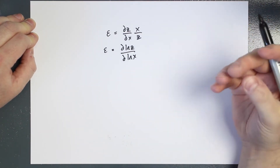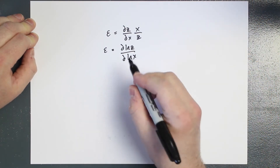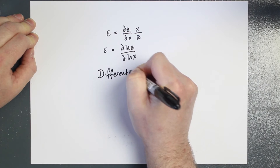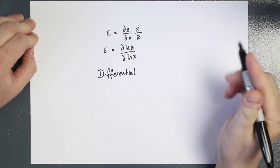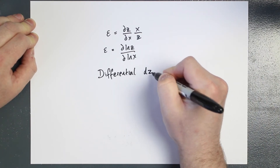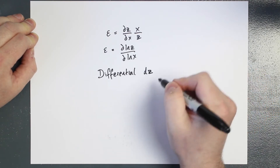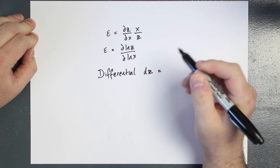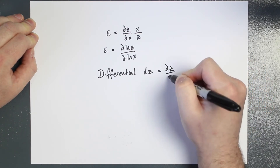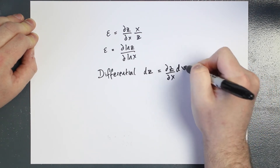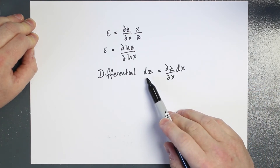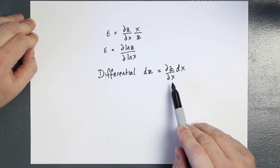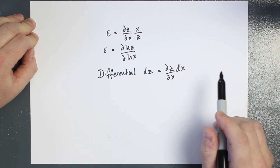The first proof will feel like I'm cheating because I'm going to bring in a new concept called a differential. The formula for a differential uses d to denote the change in z: the change in z equals the partial derivative of z with respect to x, multiplied by how much x changes — a small change in x multiplied by the rate at which it changes z. This is called a differential.